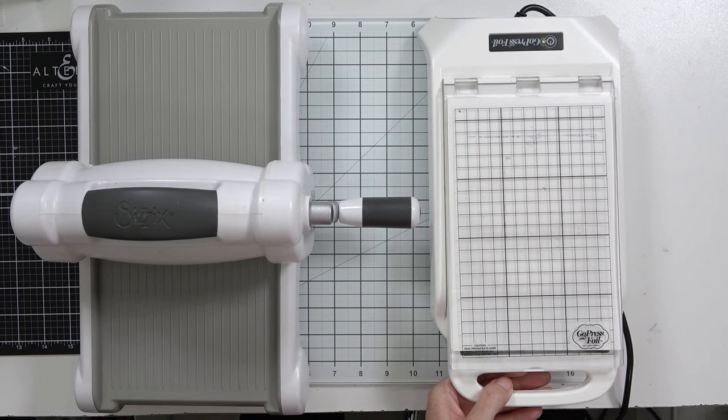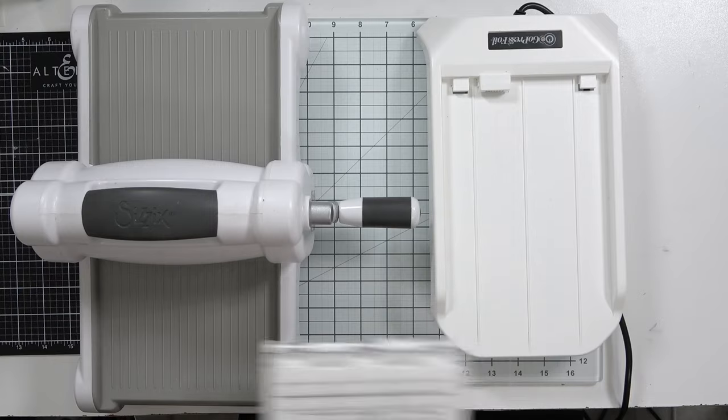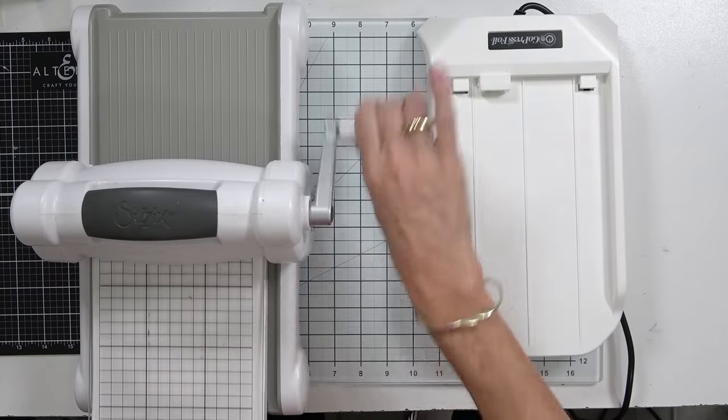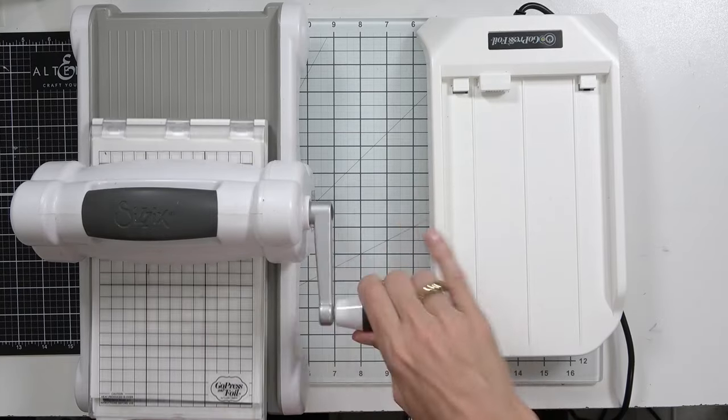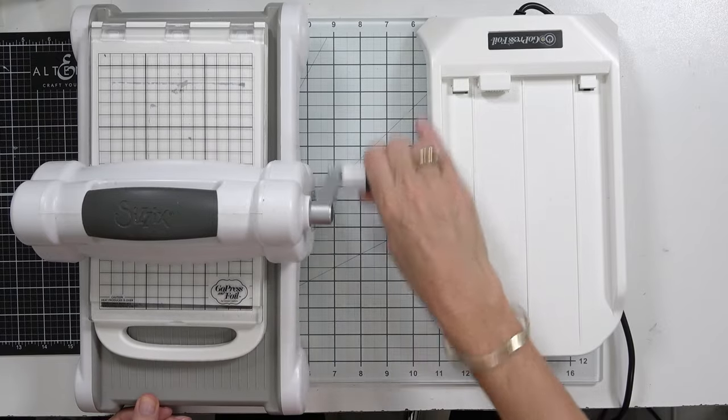So after that two minutes is up, I just take the whole plate out of the Go Press and Foil and roll it through my die cutting machine. I do go fairly slowly just to give the hot foil time to transfer from the release paper onto the cardstock.